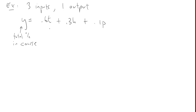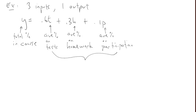Here's another example with three inputs and one output. The relationship is y equals 0.6t plus 0.3h plus 0.1p. Here, y could represent the total percentage in a course that you earn, t the average percent on tests, h the average percent on homework, and p the average participation grade. This computes your overall score if you get 60% on tests, 30% on homework, and 10% on participation. The corresponding matrix is given by this row matrix.